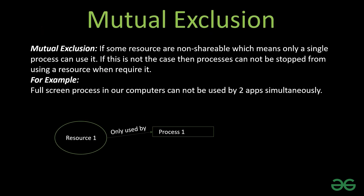Let's understand mutual exclusion. Some resources are non-shareable, meaning only a single process can use it at a time. For example, process 1 can use resource 1 and no other process can. If this were not the case, processes could not be blocked from using a resource. A practical example: full-screen processes on our computer cannot be used by two apps simultaneously.